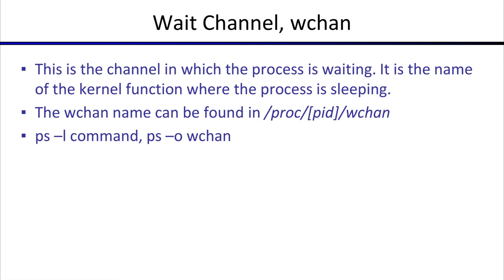How do you find more information about these? You know they're sleeping, but where are they sleeping? There is the wait channel — wchan — which you can query to find out where a task is actually sleeping or waiting. The wchan is the kernel function where the process is sleeping. When the kernel makes you wait, there has to be some function within the kernel where the process went to sleep, so wchan is really the kernel function where you went to a wait queue.